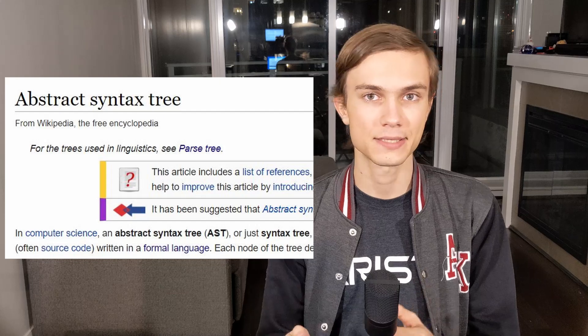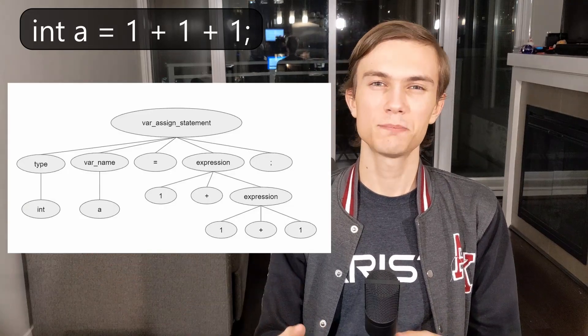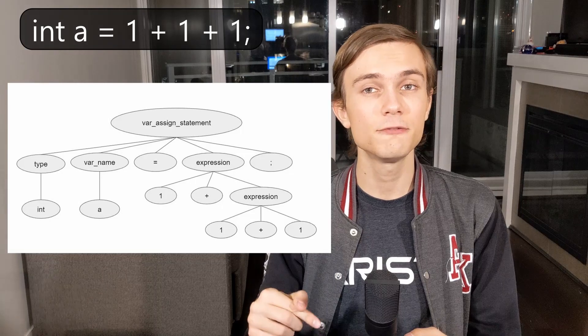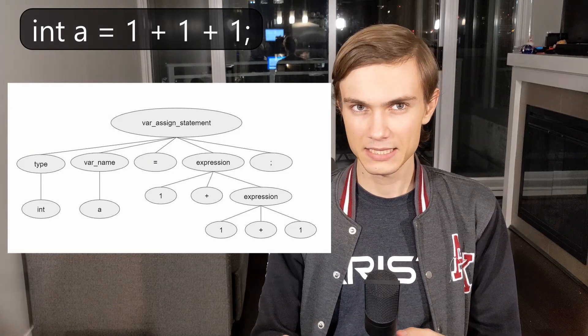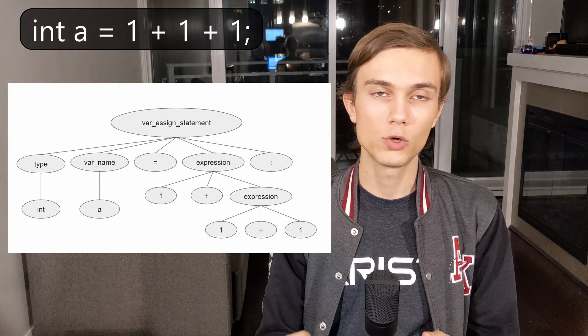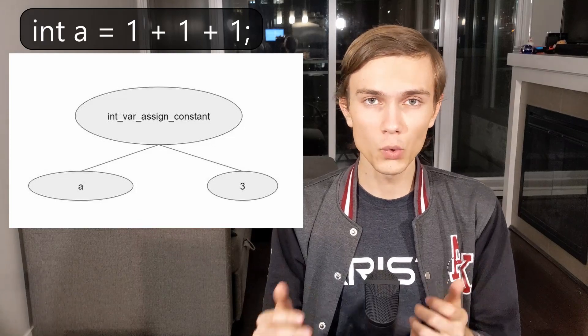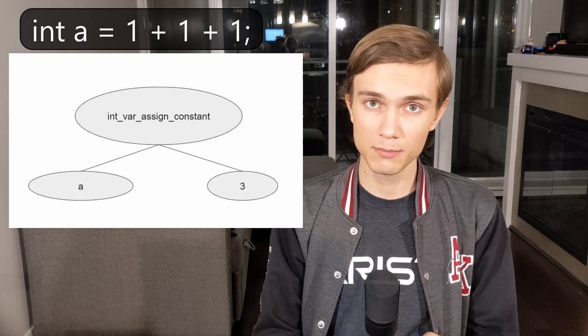The absolute first step when constructing a parse tree analyzer is to construct an abstract syntax tree, or AST. This is effectively a developer-defined data structure that mimics the parse tree somewhat, but can hold whatever information in whatever format the developer may want. Since the data structure is managed by the developer, they can even do optimizations that make the AST look very different from the original parse tree. For example, if there's a sequence of redundant addition operators in the parse tree, you might collapse them into a single AST node — the meaning is the same but the representation is smaller.